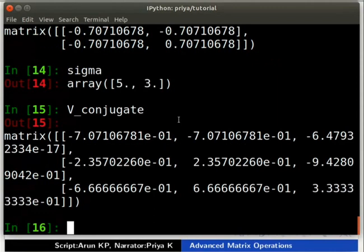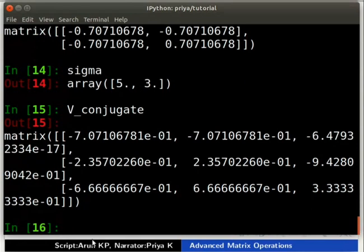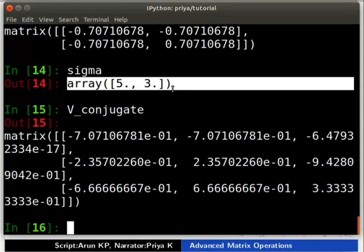We can validate the singular value decomposition by comparing the product of U, sigma and V underscore conjugate with M1. Sigma is a one-dimensional array which contains only the diagonal elements of the matrix.